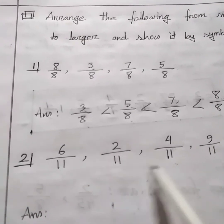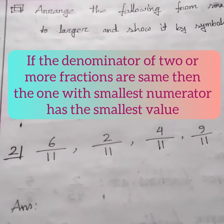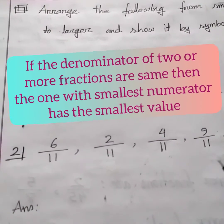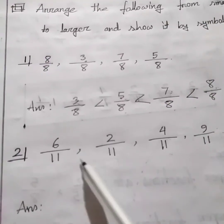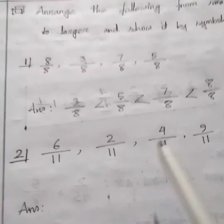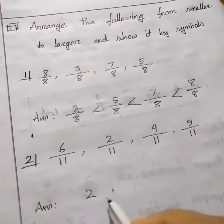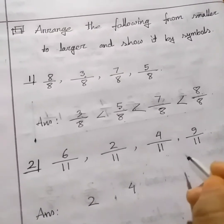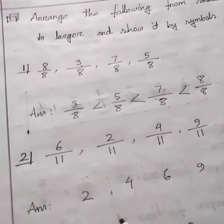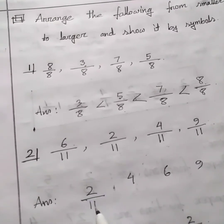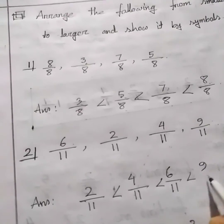Here also the denominators are the same. So again we have to apply the rule: if the denominators of two or more fractions are the same, then the one with the smallest numerator has the smallest value. We arrange the numerators from smaller to larger: 2 is the smallest, then 4, then 6, and then 9. So our answer is: 2 over 11 is less than 4 over 11 is less than 6 over 11 is less than 9 over 11.